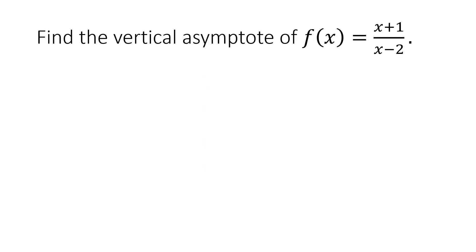Let's have example 1. Find the vertical asymptote of f(x) = (x + 1) / (x − 2). To determine the vertical asymptote, identify the value which cannot be an x-value in the given equation. We discussed this in detail when we talked about finding the domain of a rational function.